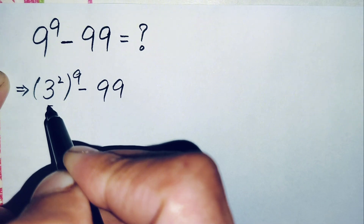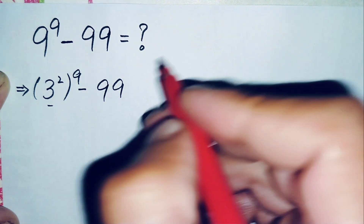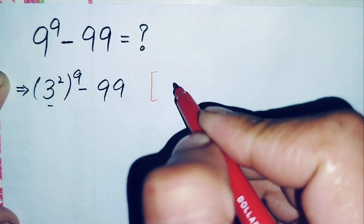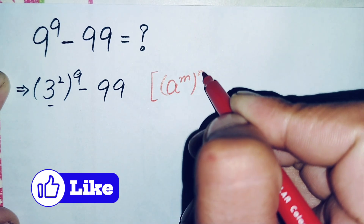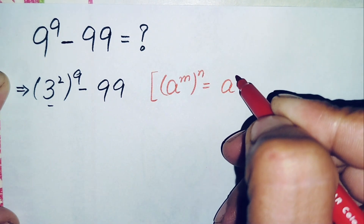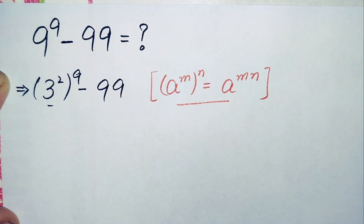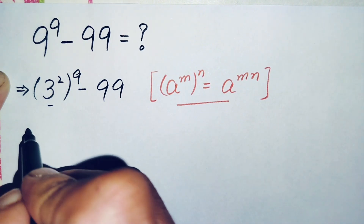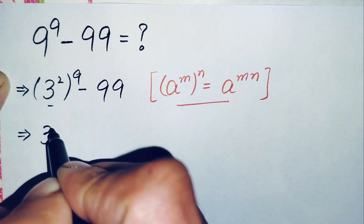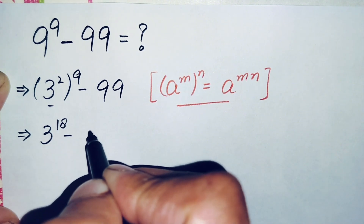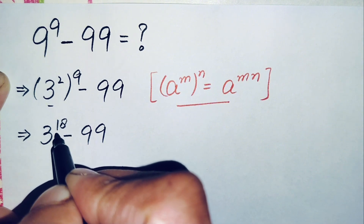Here we will use an exponential math property: a raised to power m, raised to power n, which is equal to a raised to power m times n. Using this property, we multiply the powers with each other, so this becomes 3 raised to power 2 times 9, which is 18. So this term becomes 3 to the power 18, minus 99.